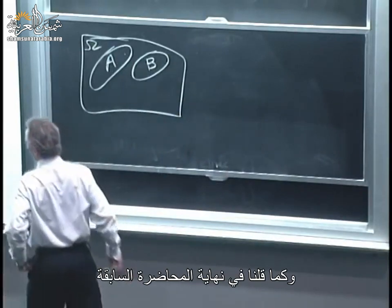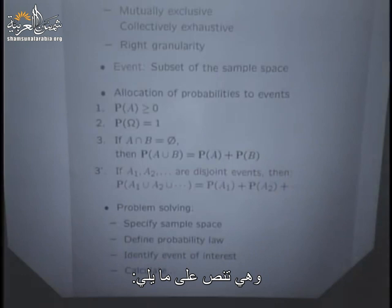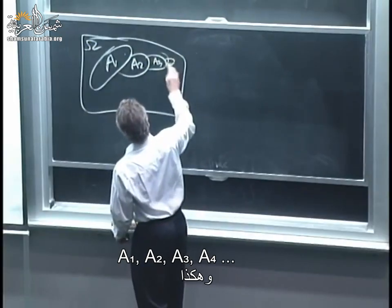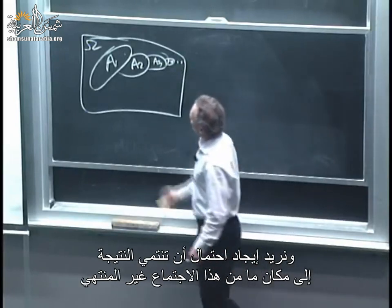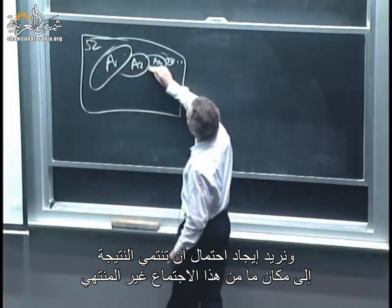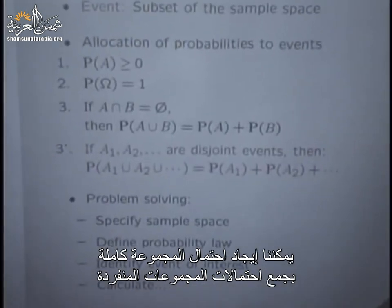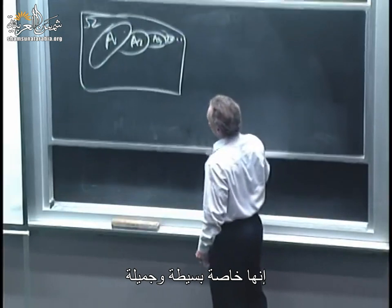It's useful to have a more general version of this additivity property. If we take a sequence of sets a1, a2, a3, a4, and so on — an infinite sequence — and we ask for the probability that the outcome falls somewhere in this infinite union, assuming that the sets are disjoint, we can find the probability of the overall set by adding up the probabilities of the individual sets.